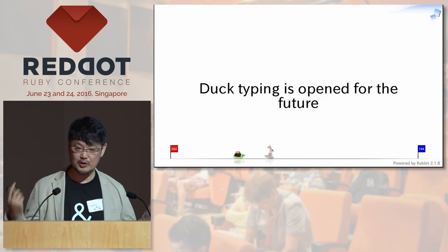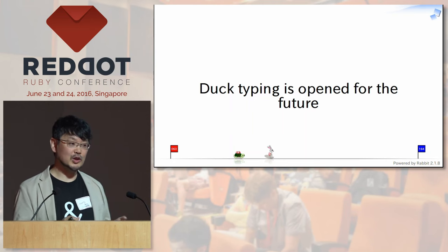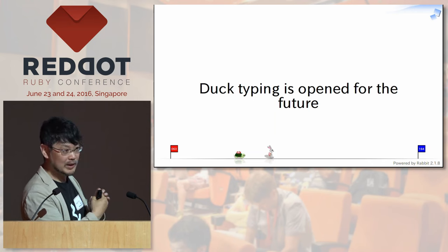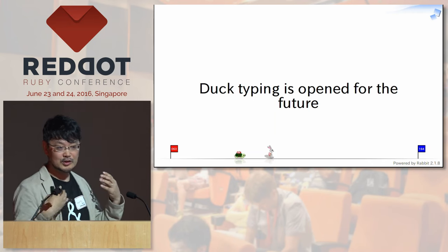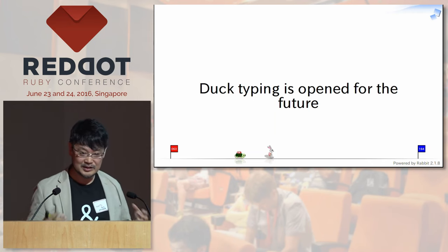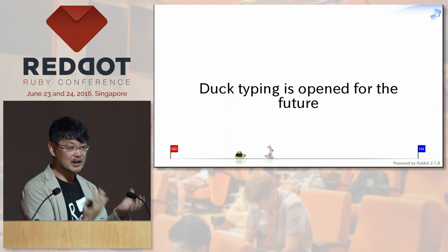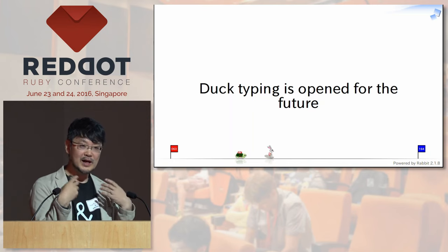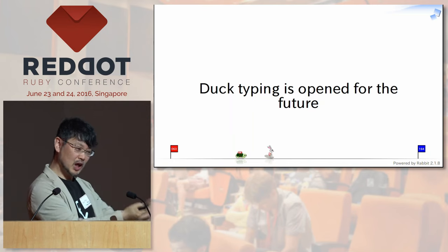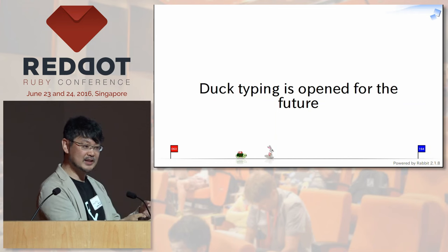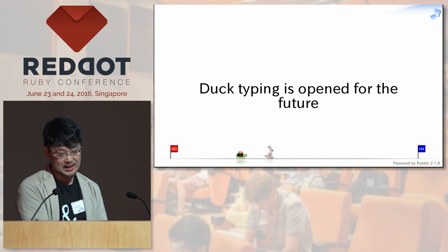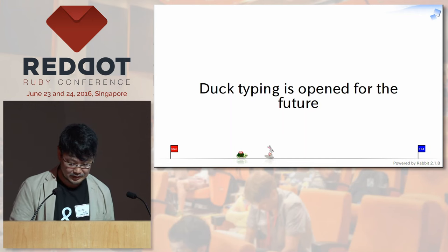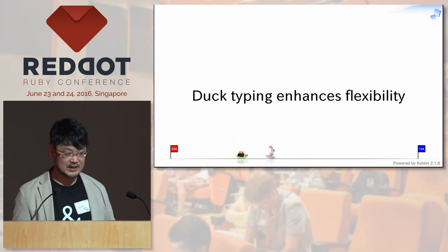Duck typing is open for the future. When you define the log function, you don't have to decide about the future. You just care about how it behaves. In the future, you might want to redirect your log message into standard IO or any other IO-like object — and it is open for that. Duck typing has flexibility.